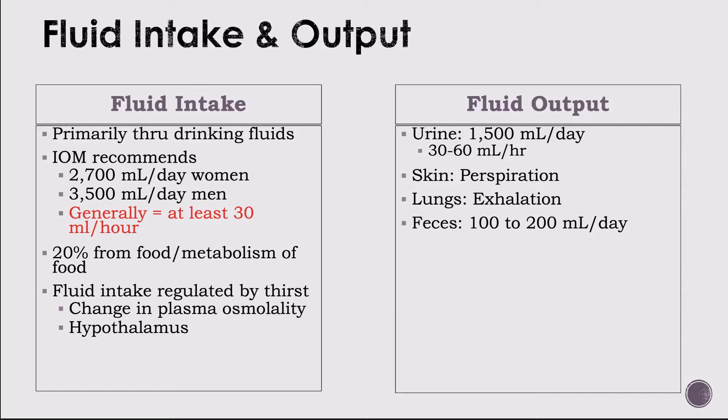A patient with a trach on a vent has insensible fluid loss — you can't track how much fluid they're losing from that, but losses can be up to 1.5 liters per day from vapor and aerosols. Third spacing is also insensible because the amount depends on severity. The most important number to remember: output should generally be at least 30 mils per hour.